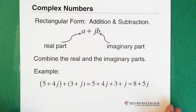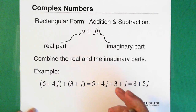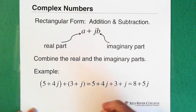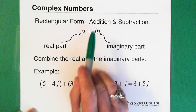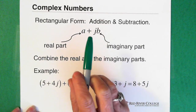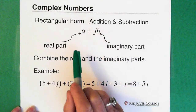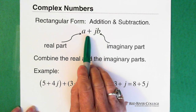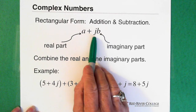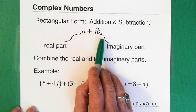So just a reminder, based on the introduction to complex numbers, we have two different forms: rectangular and polar. In rectangular form it's easier to do the addition and subtraction of these numbers. And a reminder that we have the real part, which is just a number, added to j times b, and the j — this piece here — is our imaginary part.